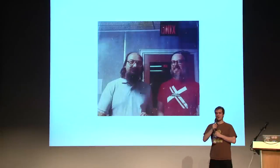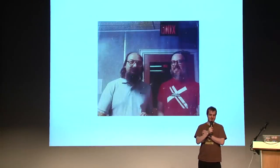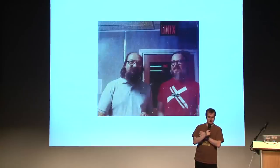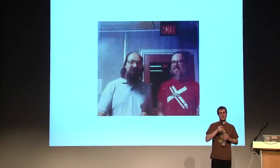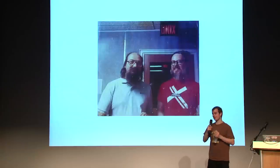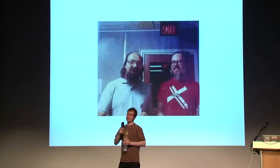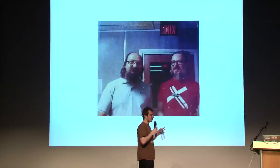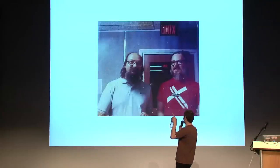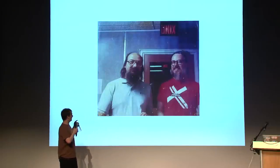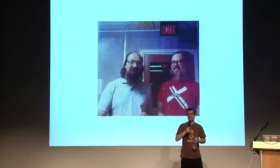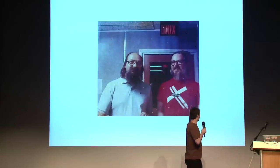So who knows who these two fine gentlemen are? It's Dennis Ritchie and Ken Thompson — two of the main characters behind the Unix operating system, working at Bell Labs around 1970. Ken Thompson is the main guy behind Unix itself. And then there's Dennis Ritchie, who is probably most well known for the invention of the C programming language.